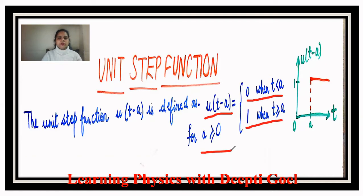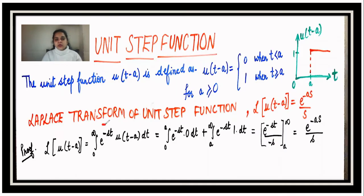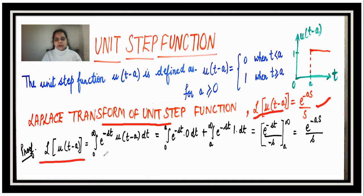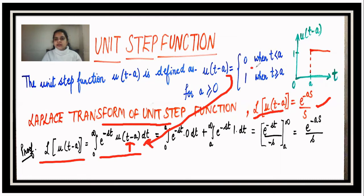Now let us find out how to calculate the Laplace transform of the unit step function. The Laplace transform of u(t - a) is given by e^(-as)/s. Applying the basic definition of the Laplace transform, we have the integral from zero to infinity of e^(-st) f(t) dt. Substituting f(t) = u(t - a), we know u(t - a) is zero from zero to a and one from a to infinity.